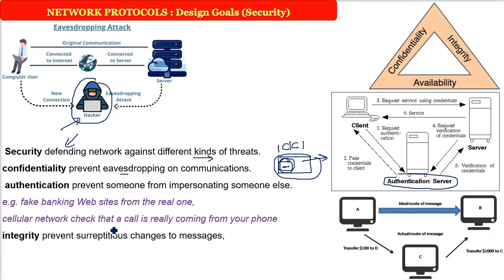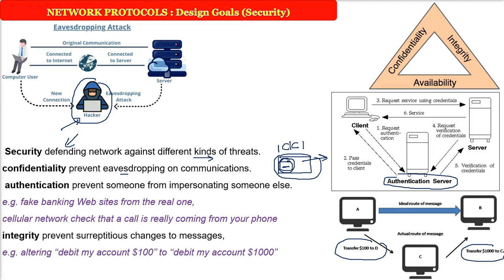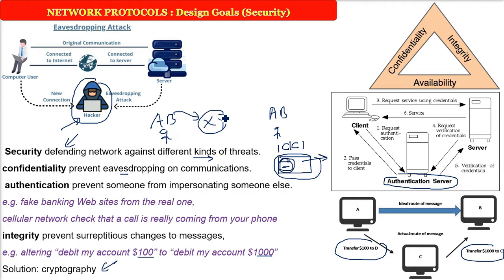Integrity is another security concern - whether the message sent is what is received. For example, if you are debiting $100, it should not be altered to $1000. The solution is cryptography: encrypting and decrypting your data so others cannot read it. For example, if you want to send 'AB', you send it as 'XY' - that is encryption - and the destination decrypts it back. Various cryptographic techniques are available.